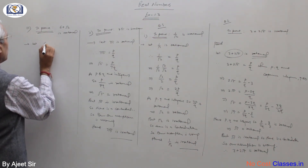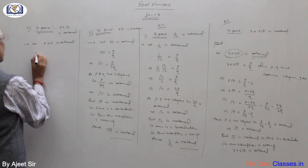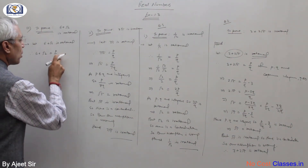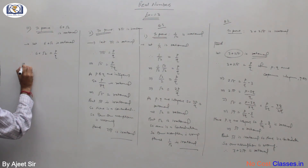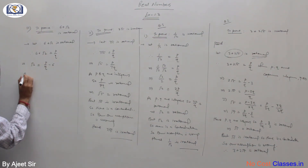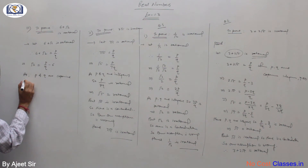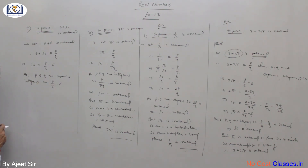Third part: prove that 6 plus root 2 is irrational. Assume 6 plus root 2 is rational. Therefore we can write 6 plus root 2 equals p upon q where p and q are co-prime and q is not equal to 0. This implies root 2 equals p upon q minus 6. Since p and q are co-prime integers, p by q is rational and 6 is rational, so rational minus rational is rational.